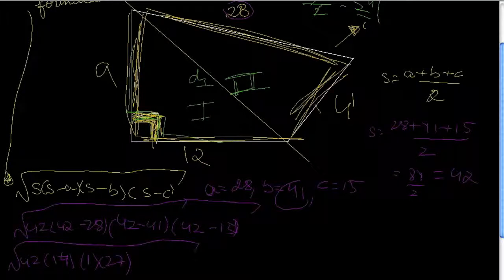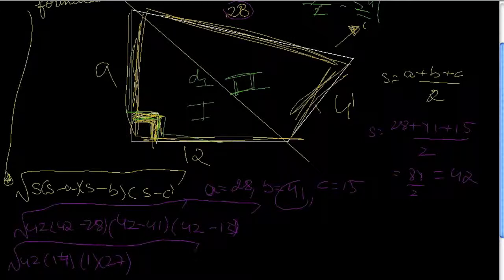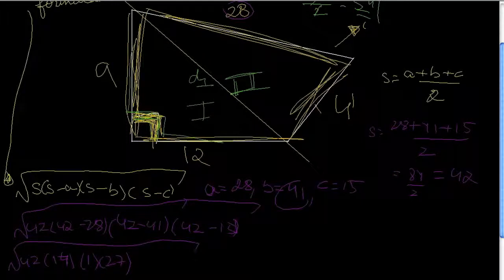Now my calculation might be wrong, let me just check it. So that's 28, then 41, 28 plus 41 is 69, plus 15 is 84 — that's correct.